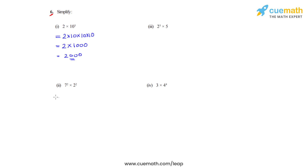Going to the second bit, which is 7 raised to 2 times 2 raised to 2. So 7 raised to 2 is 7 squared, which is 49, times 2 squared, which is 4. So we get the answer for the second bit as 196.